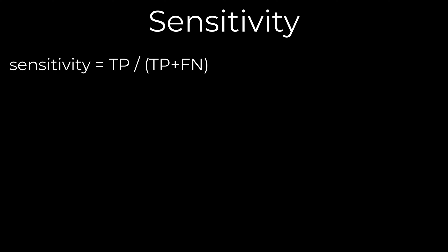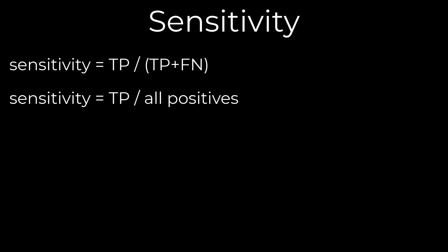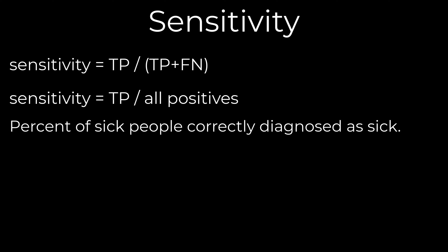Sensitivity and specificity are also ways to measure the performance of a model by measuring the rates of true and false positives and negatives. Sensitivity is the number of true positives, TP, divided by the number of true positives, TP, plus the number of false negatives, FN. The denominator, TP plus FN, is equal to the number of all positives in the data. Consider a medical example: sensitivity is the percentage of people with a disease that the test correctly identified as having.